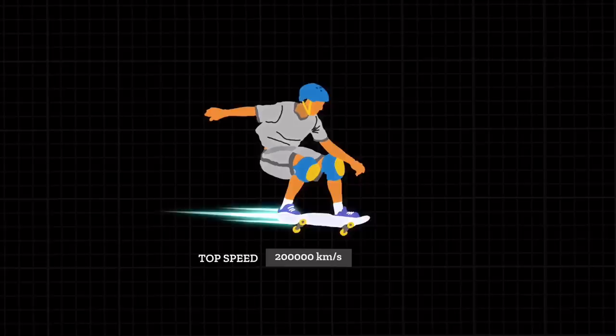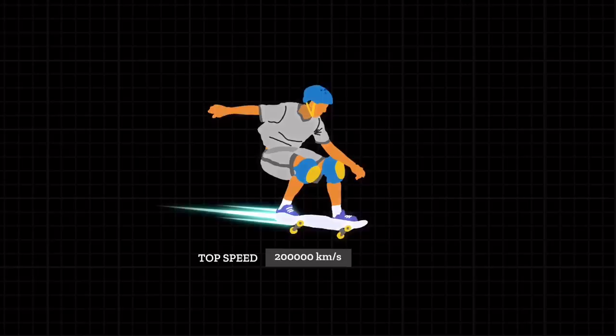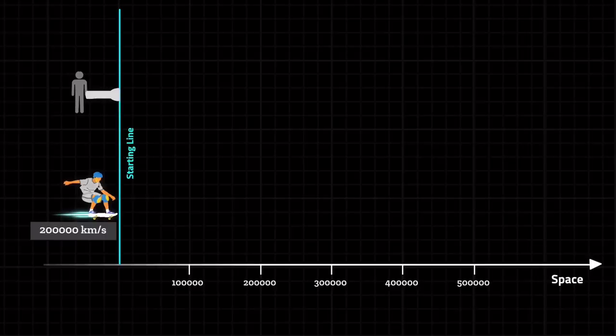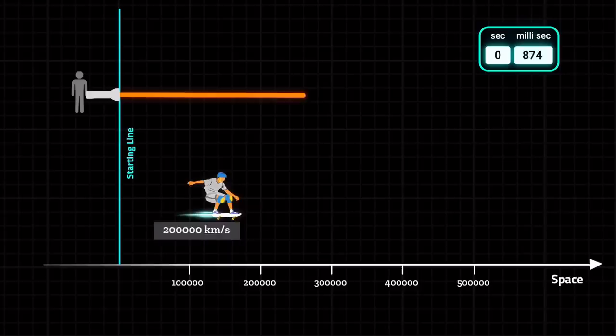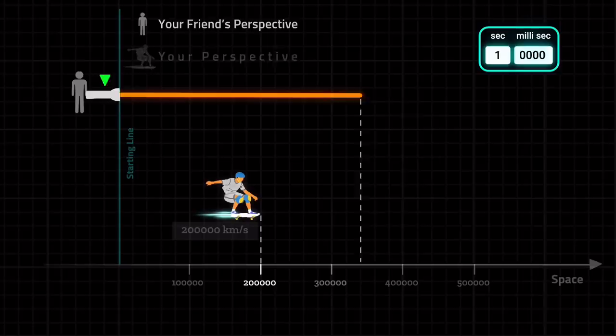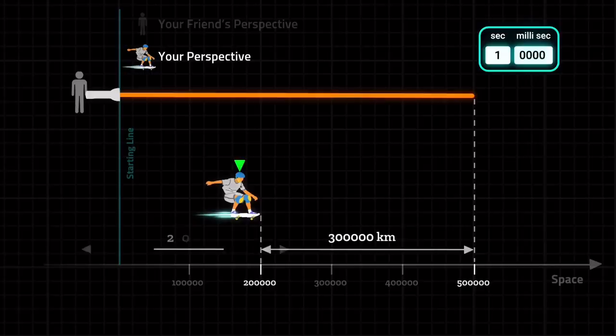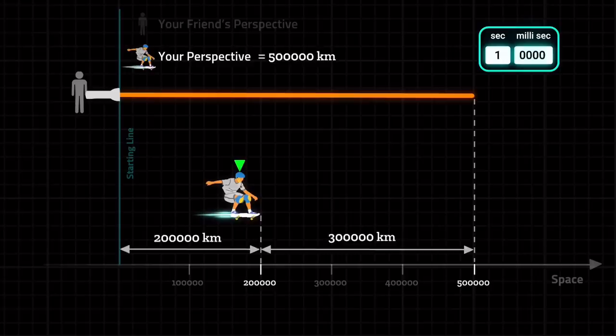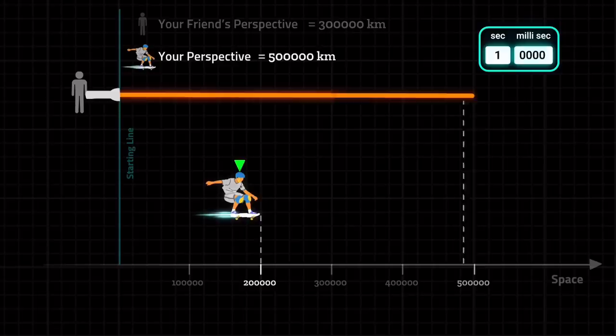Imagine you have a skateboard that can travel at 200,000 kilometers per second and you decide to chase a light beam. Your friend has a laser — he switches it on and at the same time you start to chase. After one second your friend measures the light beam has traveled 300,000 kilometers and you have traveled 200,000 kilometers. But at the same time, you measure the light beam to have already traveled 300,000 kilometers away from you. So your actual travel distance is 200,000 kilometers from the start, and light has traveled 300,000 kilometers away from you — from your perspective, the total distance light traveled is 500,000 kilometers.